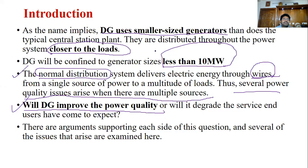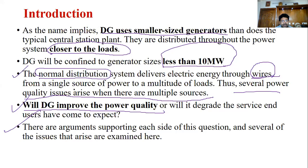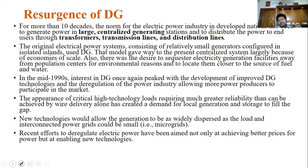But why are DGs not placed everywhere? The main issues are economic: the cost of land, water, transportation, cost of devices, land acquisition, water problems, and maintenance problems. All these factors reduce the widespread use of DGs.